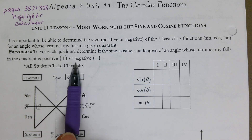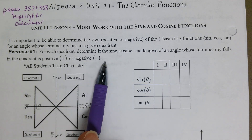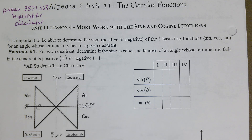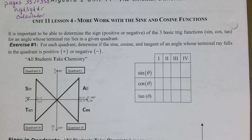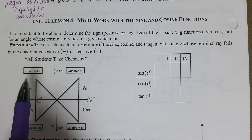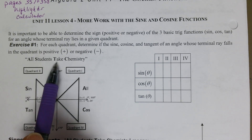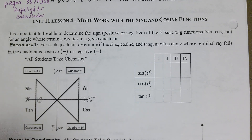For each quadrant, determine if the sine, cosine, and tangent of an angle whose terminal ray falls in the quadrant is positive or negative. We use this acronym: all students take chemistry.